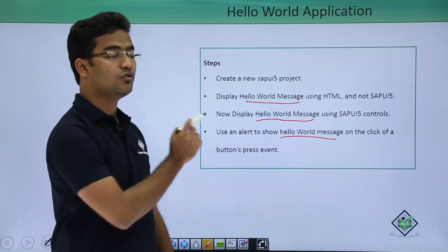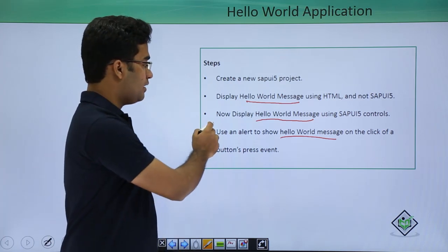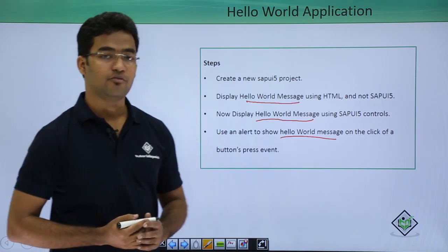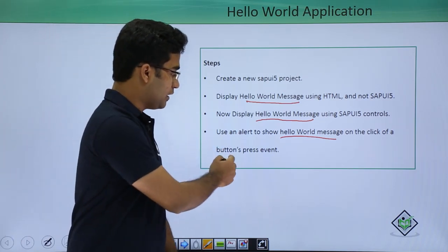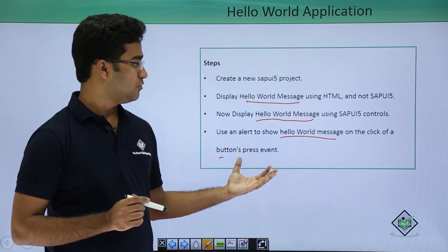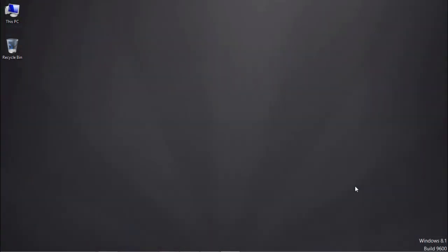The first approach is to display the Hello World message using HTML itself — no SAPUI5 controls or libraries are loaded, only HTML5 is used. In the next step we will populate the Hello World message using a SAPUI5 control itself — all the SAPUI5 libraries will be loaded and the controls will be used. Then we will use a button and on the click of that button we will populate an alert message with the Hello World message.